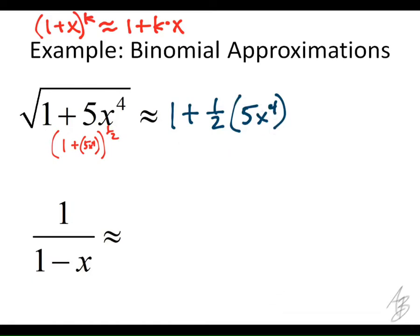We can approximate the value of this square root without needing to take a square root. This is going to be really accurate when x is small — maybe like 0.1. We wouldn't want to get a whole lot bigger than 0.1, but that kind of depends on the second derivative — on how much this function is actually curving, and that's going to depend on what k is.